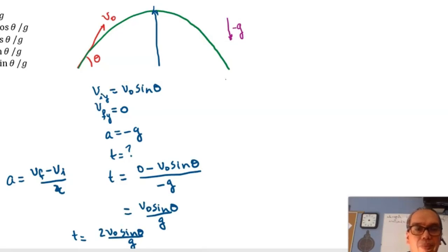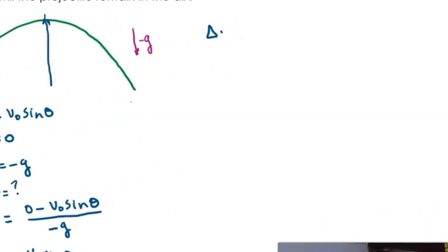There is also the possibility that you want to say that the displacement in the y direction is zero and your initial y velocity is v0 sine theta. Then, given that the acceleration is negative g and you want the time, the third equation comes into play: displacement equals initial velocity times t plus one half acceleration times t squared.